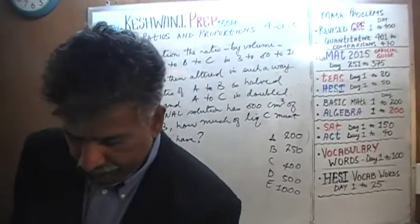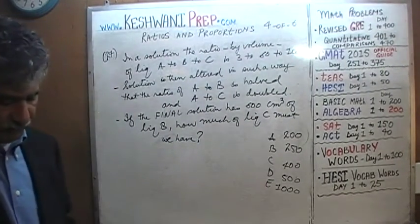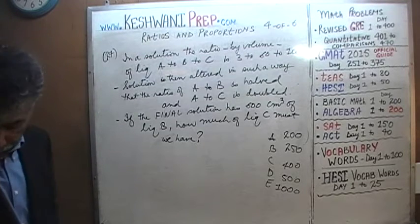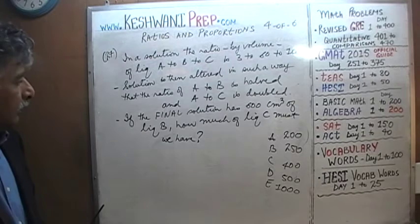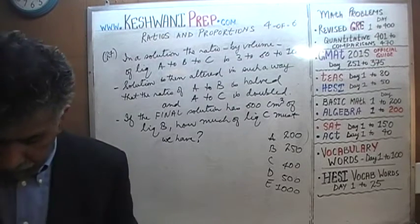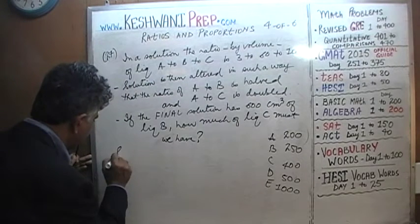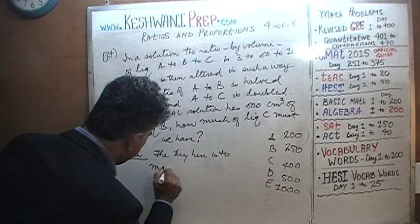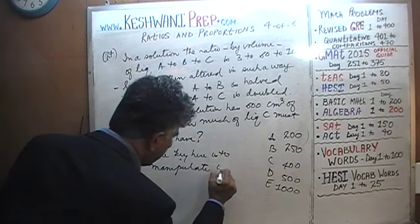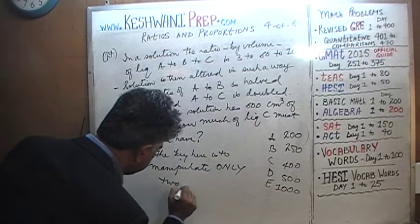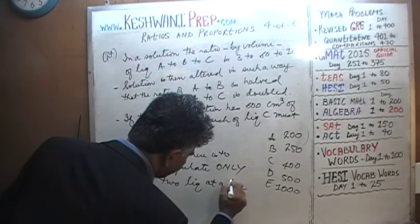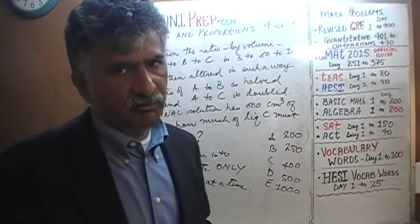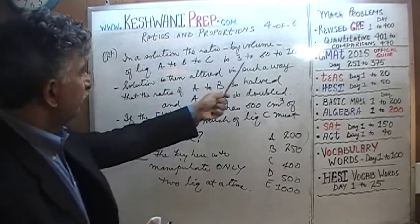The key here is to manipulate only two liquids at a time. Don't try to manipulate everything together or you'll never get anywhere. The original ratio is 3 to 60 to 100, and at the end the final solution must contain 600 cubic centimeters of one of the liquids.